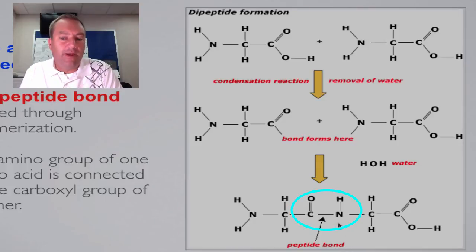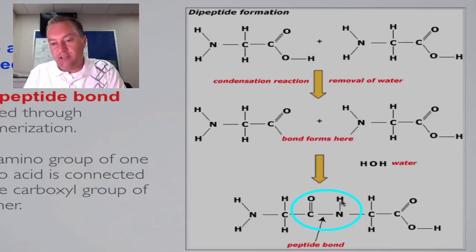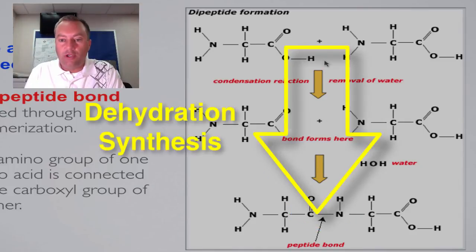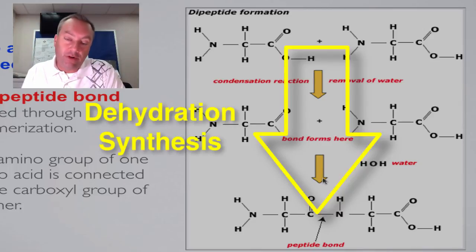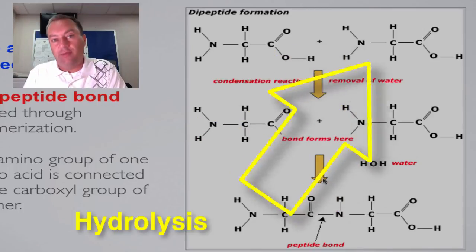You can always find a peptide bond by looking for a carbon with a double bonded oxygen bonded to a nitrogen that has a single hydrogen on it. That is your peptide bond. So going in this direction is dehydration synthesis. If we go in the reverse direction, that will be hydrolysis.